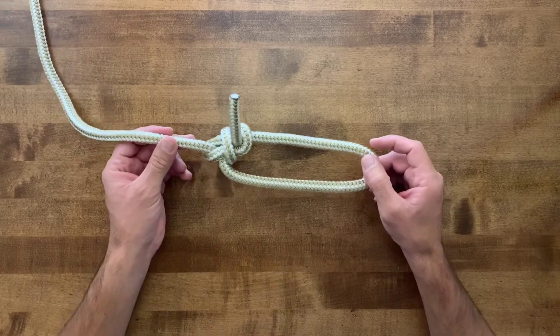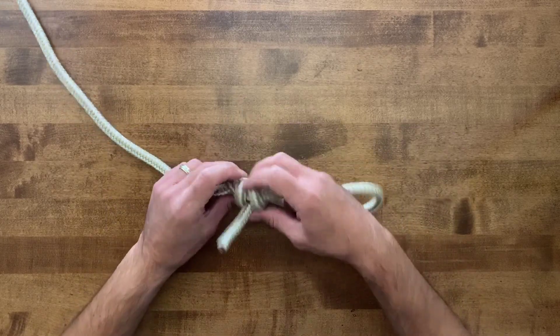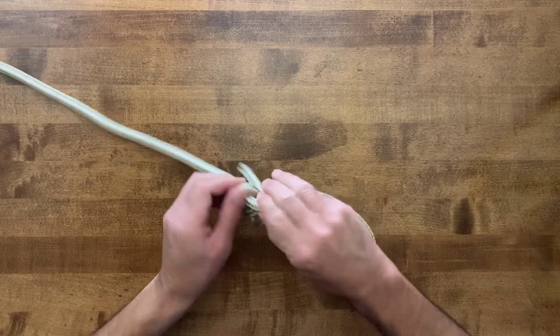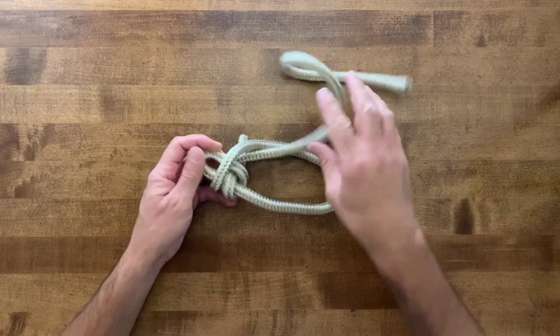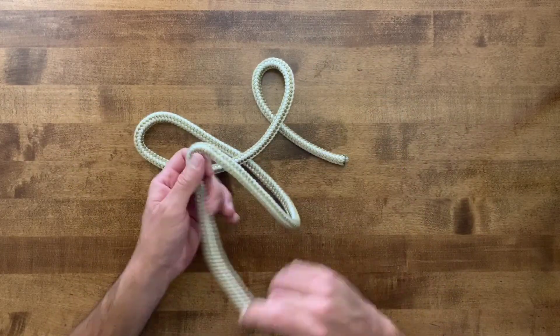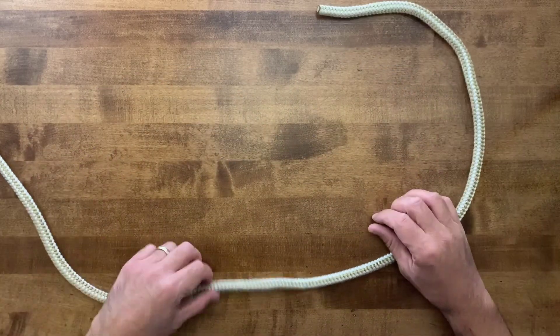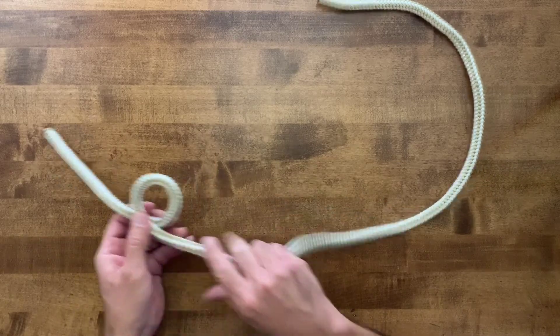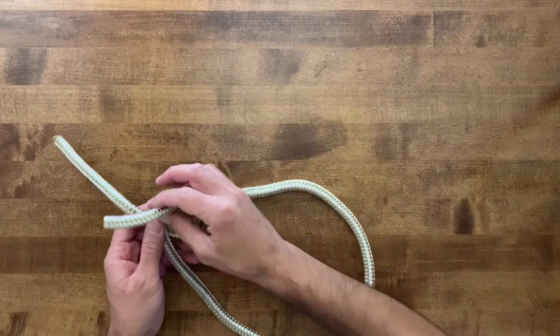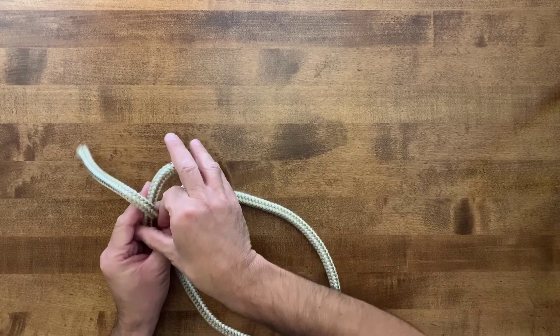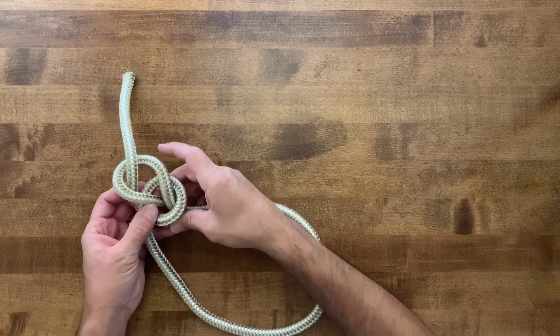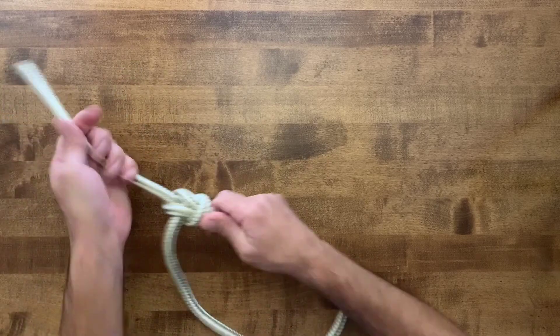Bowline knot. Fantastic knot to learn. This knot is also used whenever you're rescuing someone either out of a ravine, or rescuing someone out of the water. If you used, you would actually make a bowline, and then throw this out to the person to put around their waist, or underneath their armpits, around their chest.